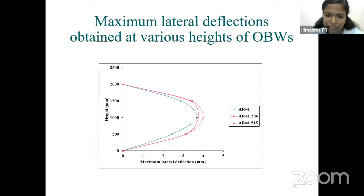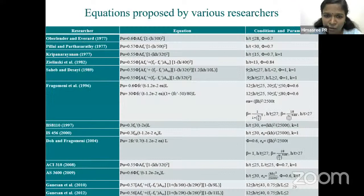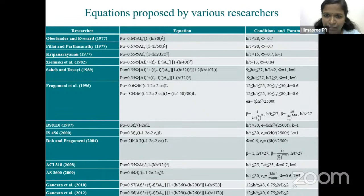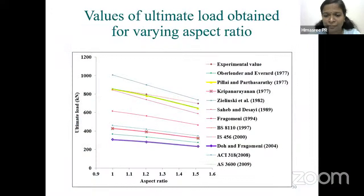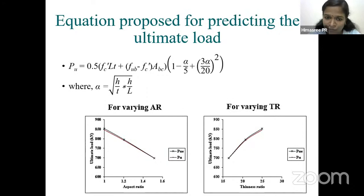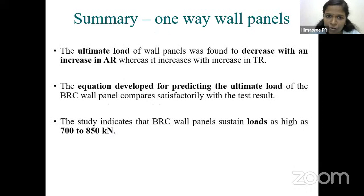The deflection at the center of the wall panel was only about 4 mm, and most wall panels failed by crushing rather than bending or buckling. Researchers have proposed various formulas for steel-reinforced wall panels; we substituted bamboo values in place of steel, but the results did not compare satisfactorily. Therefore, we predicted a new equation for finding the ultimate load of wall panels under one-way in-plane action, which compares satisfactorily with the test results.